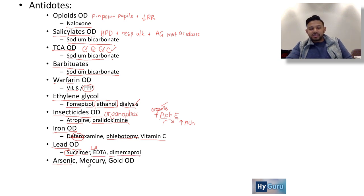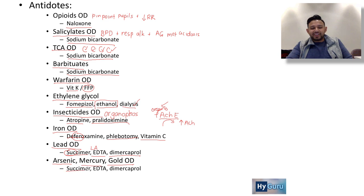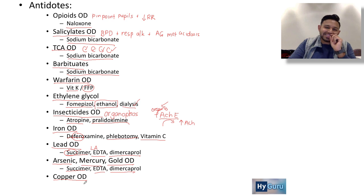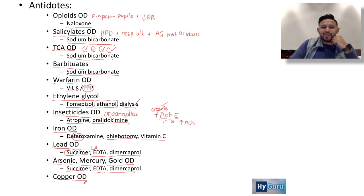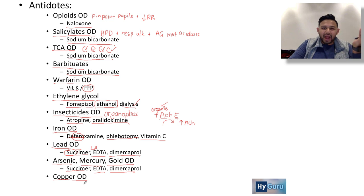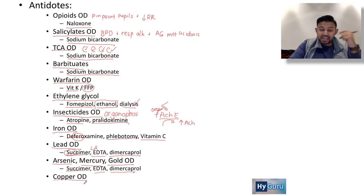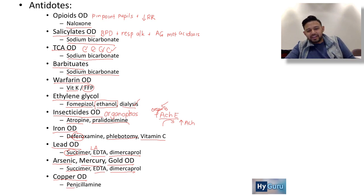For other heavy metals — arsenic, mercury, and gold — you would also use succimer, EDTA, and dimercaprol. For copper overdose, the classic disease is Wilson's disease: watch for Parkinsonism, Kayser-Fleischer rings in the eye, and predisposition to cirrhosis. Treatment for copper overdose is penicillamine — remembered by 'copper pennies.'